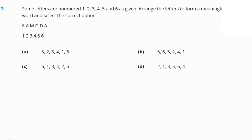Some letters are numbered 1, 2, 3, 4, 5, and 6. Arrange the letters to form a meaningful English word and select the correct option. The letters are E, A, A, E, A, M, G, D, A with corresponding numbers E=1, A=2, M=3, G=4, D=5, A=6.